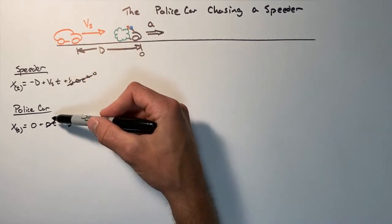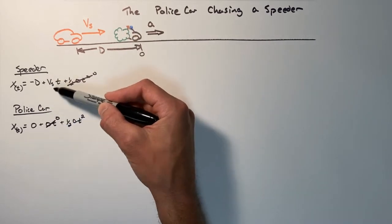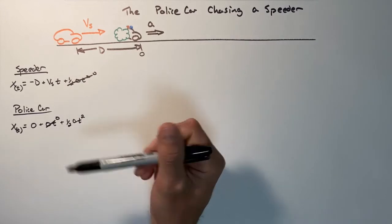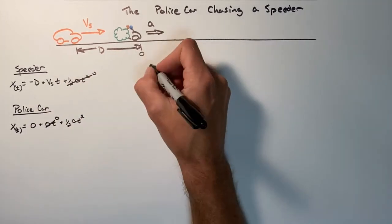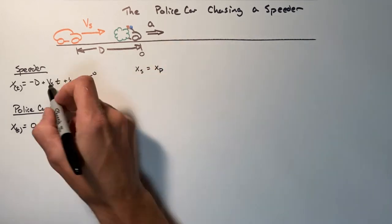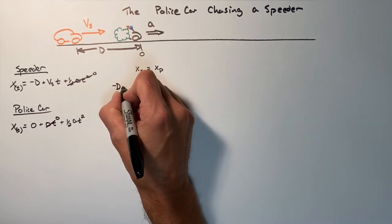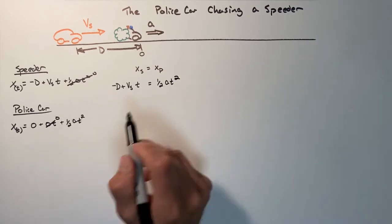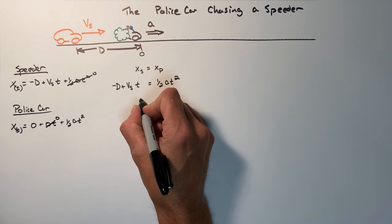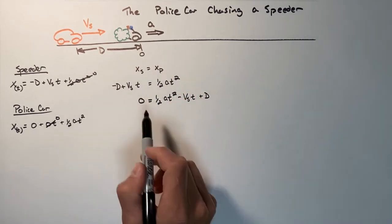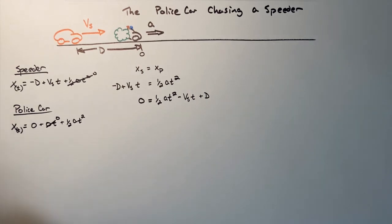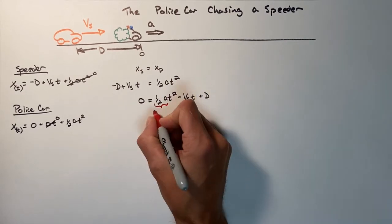When the two vehicles are at the same position, these two equations are equal. The whole point of this problem is to solve for the point in time when the two vehicles are at the same position. So we set the position of the speeder equal to the position of the police car, substitute in the two functions, and rearrange into standard quadratic form to identify terms a, b, and c for the quadratic equation.